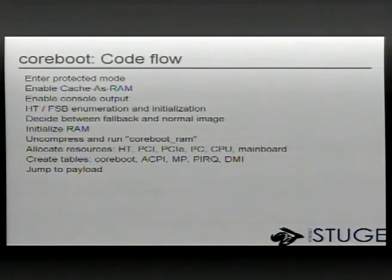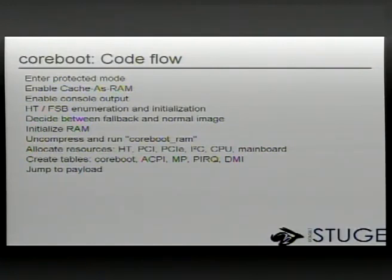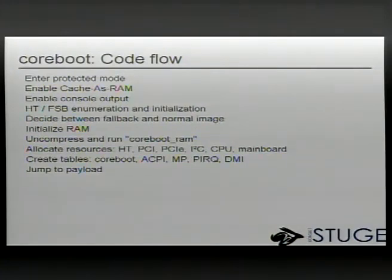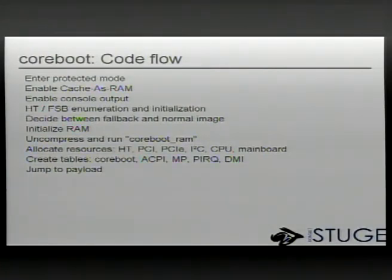The code flow at runtime — I talked a bit about it connected to the source tree. The first thing that happens is entering protected mode, enabling cache-as-RAM, console output, and going over the hypertransport or most central components in the system to initialize them and set up the speeds. For hypertransport, you have to do a reset — you set the frequency you want hypertransport to run at, then reset, and it comes up with a higher frequency. Then you skip that step and don't reset again. Coreboot supports a fallback or normal scheme where you can have two sets of firmware inside the same flash chip, and after early initialization that decides which path to follow.